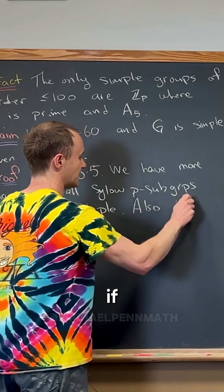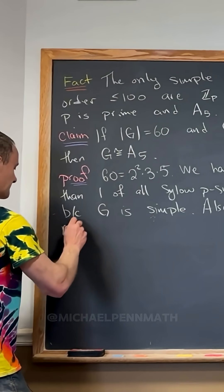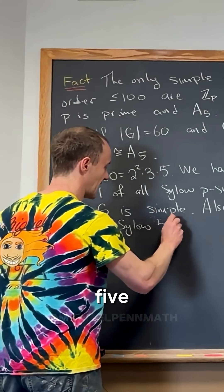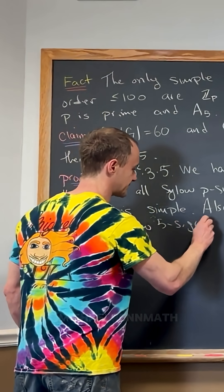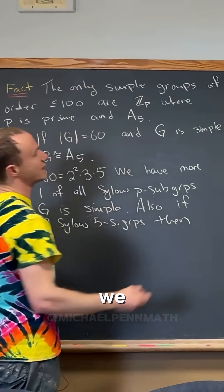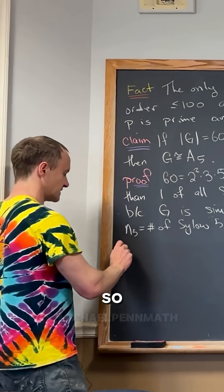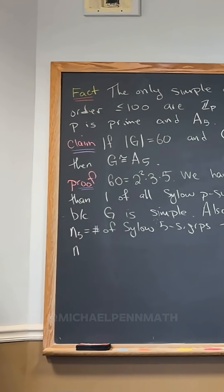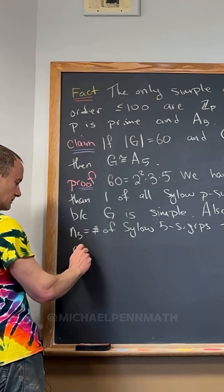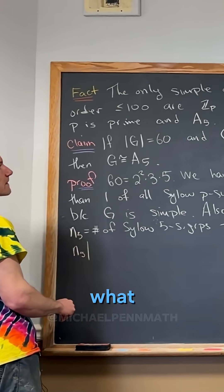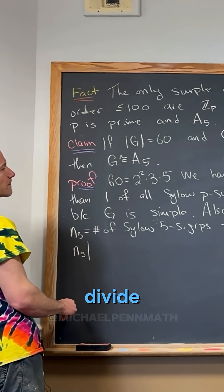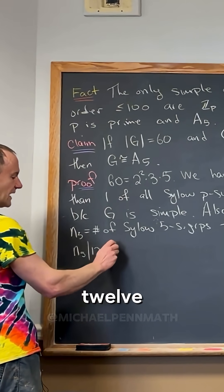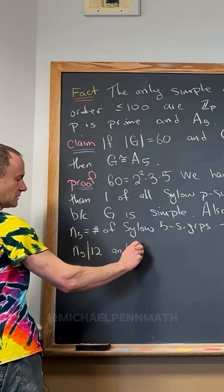If N5 equals the number of Sylow 5-subgroups, what do we know about N5? It has to do two things: it has to divide — we're in order 60, so it divides 12? Yes, 12. Good.